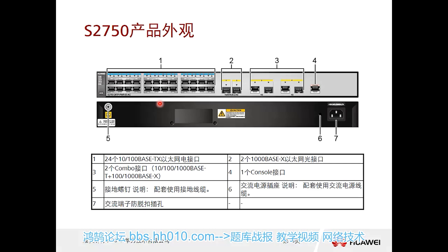The first section represents a 24-port Ethernet electrical interface — in simple terms, it is an electrical port. Generally this is used as a downlink at 100 megabits. The second part is a gigabit Ethernet interface, which can be used as an uplink. The third part is a combo interface.